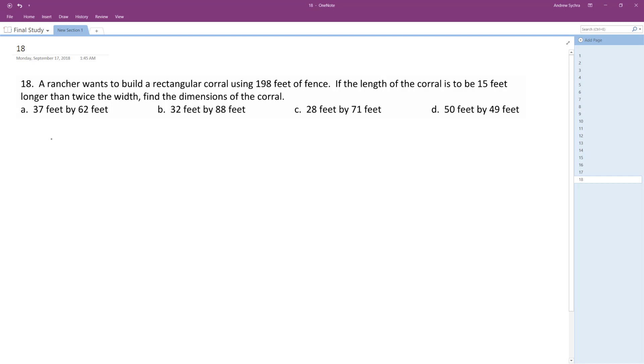So length times width, two lengths plus two widths equals 198 feet. So that's the perimeter, 198 feet of fence total.